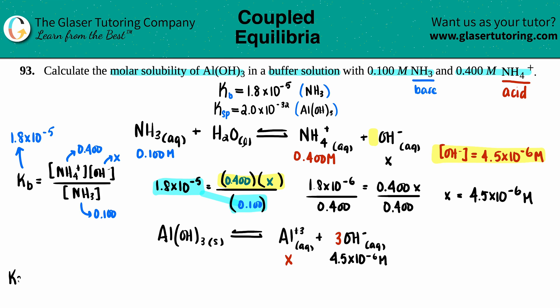Let's see what we get. Ksp equals in this case just the concentration of the two products, so we have Al³⁺ and OH⁻, and that one has to be raised to the third because there was a 3 coefficient in the front. Ksp was 2.0 × 10⁻³².